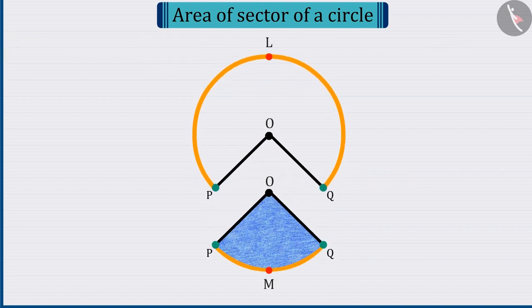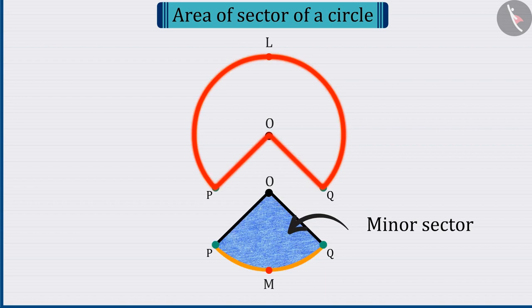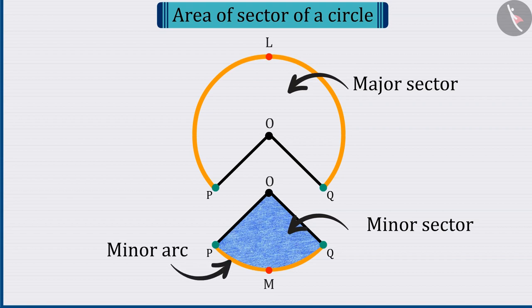Hence, in this circle, the area OPMQ is minor sector and the remaining circular region is major sector, where PMQ is the minor arc and PLQ is the major arc.